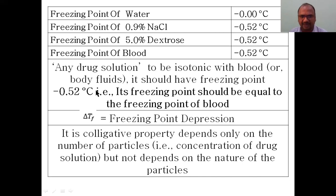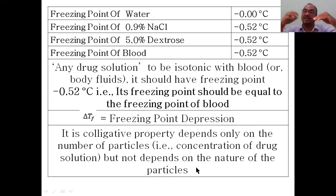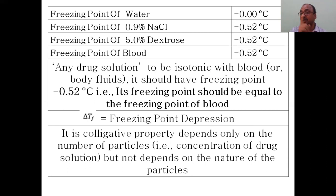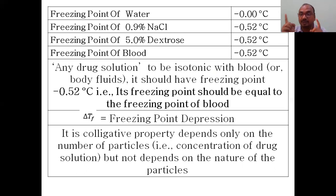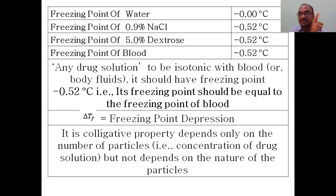Any drug solution to be isotonic with blood and body fluids must have a freezing point of minus 0.52 degrees centigrade. Delta Tf is the freezing point depression — how much the freezing point is depressed after addition of salt. It is a colligative property from physical pharmacy. Colligative properties do not depend on the chemical nature of the substance; they depend purely on the number of molecules added.